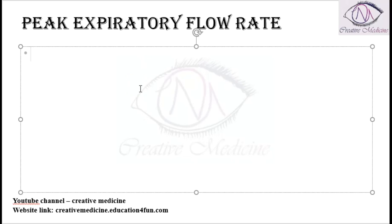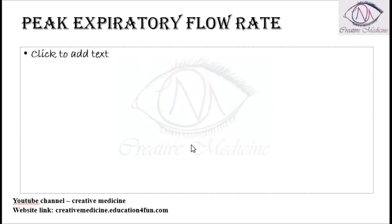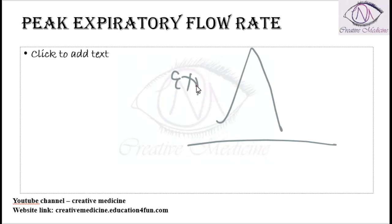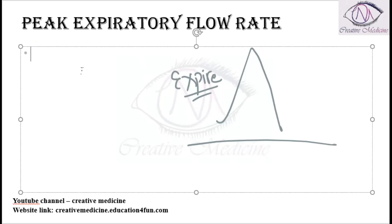Peak expiratory flow rate is the maximum amount of air that the patient expires. If you give a spirometry to the patient and ask the patient to inhale and expire, this peak expiratory flow is mainly measured with a peak flow meter. The maximum amount of air that the patient expires is called peak expiratory flow, and the rate at which he expires is the peak expiratory flow rate. This is measured by a peak flow meter.